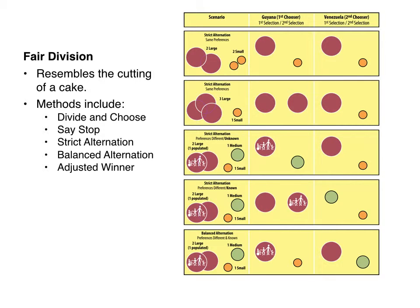Both parties are kept in check because they know they're going to get something from the deal. This works well for equal division, but some conflicts are not so simple. The equitable appeal of Divide and Choose diminishes when the preferences of the parties differ. The book talks about the conflict between the Nature Conservancy and the American Petroleum Institute trying to divide the Arctic National Wildlife Refuge, where the value placed on the same amount of land could certainly differ.